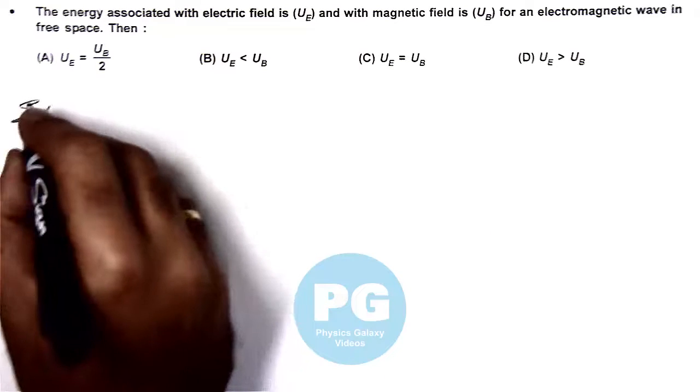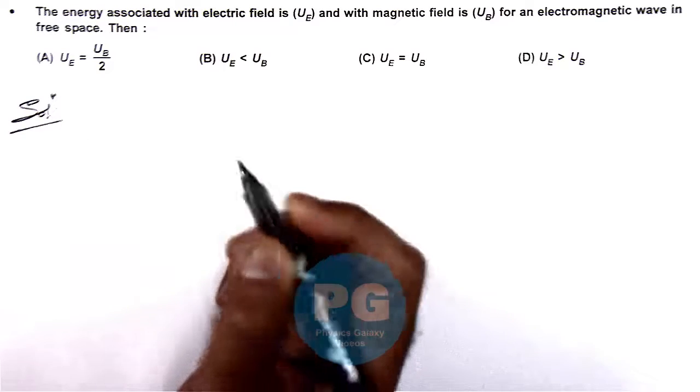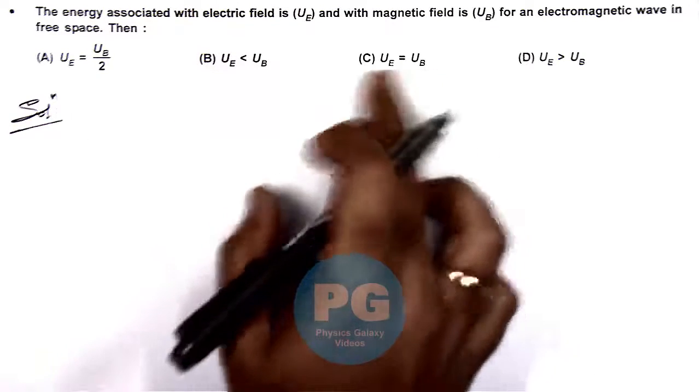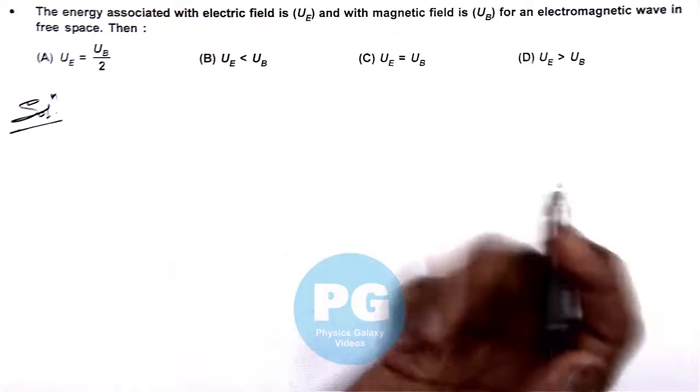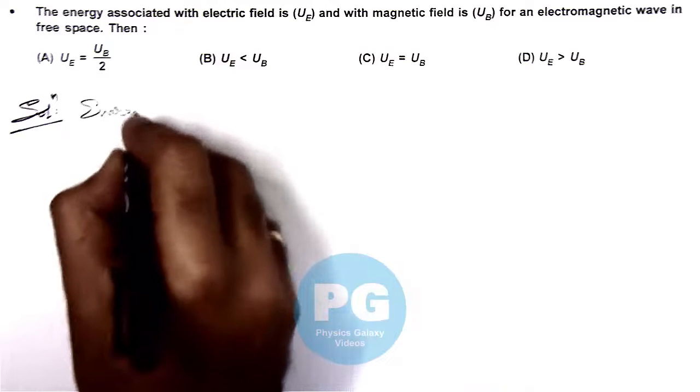This is a fact-based question in which we know the energy density of electric field and magnetic field are the same, so the answer should be option C. However, you can derive this also for conceptual understanding.